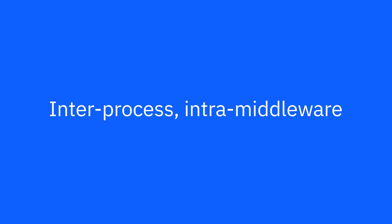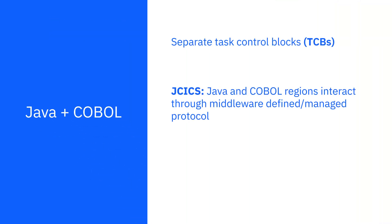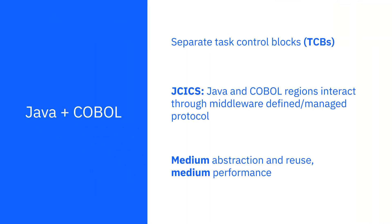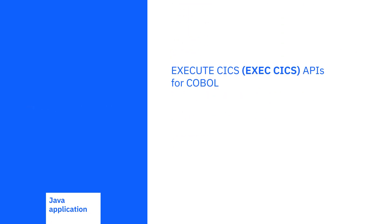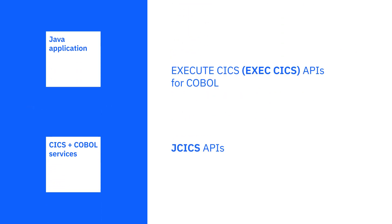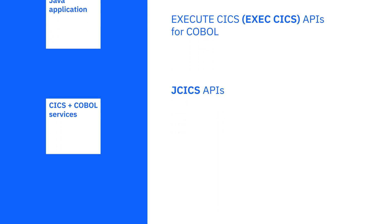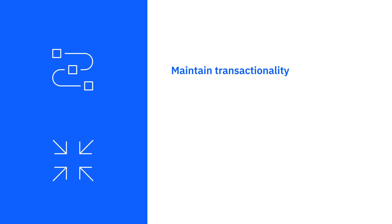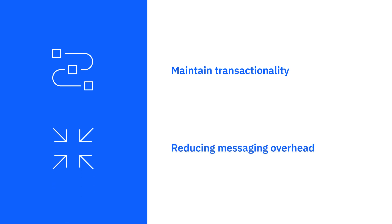In the next level, you leverage Java and COBOL in separate processes or task control blocks, enabling your applications to communicate with support from the middleware subsystem. In this example, you can use different APIs that allow you to access CICS and COBOL services from your Java applications. Using these APIs, you can form Java applications and processes that let you leverage CICS services. This lets you maintain transactionality while reducing overhead in terms of messaging.